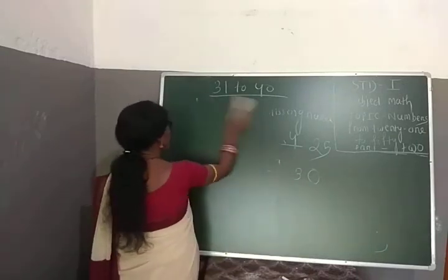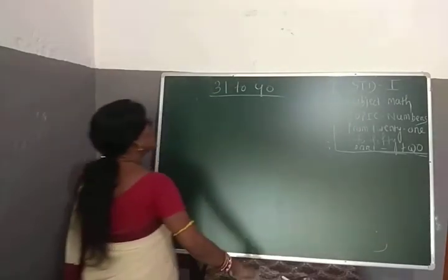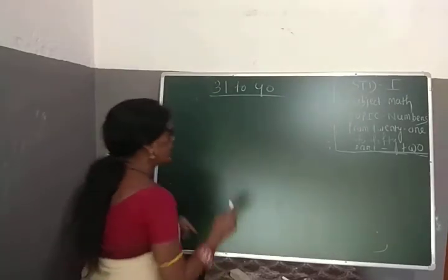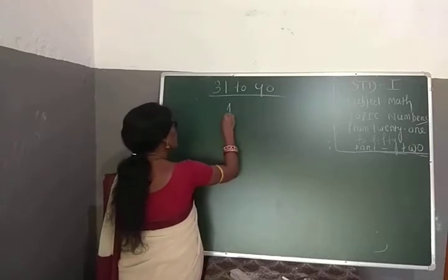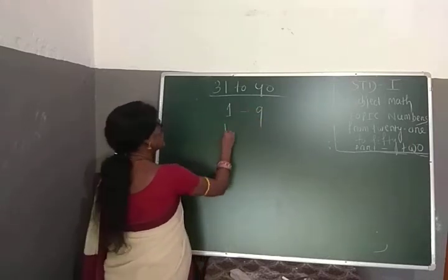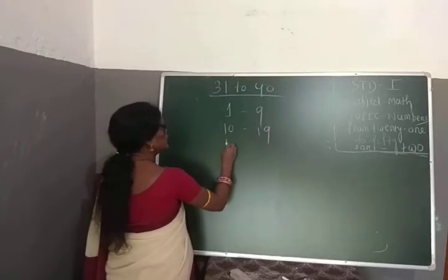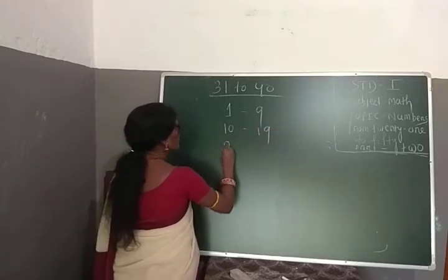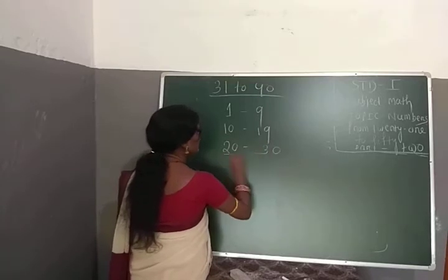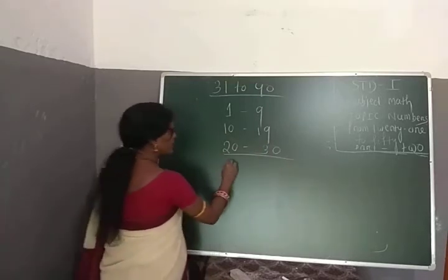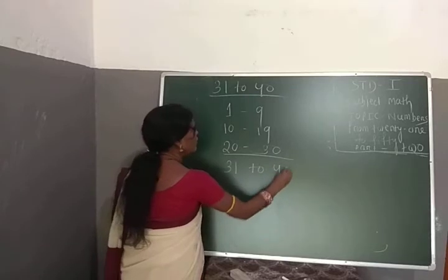Now let's come to today's discussion, that is numbers 31 to 40. So first we discussed 1 to 9, next was 10 to 19, next was 20 to 30. But today our discussion is 31 to 40.